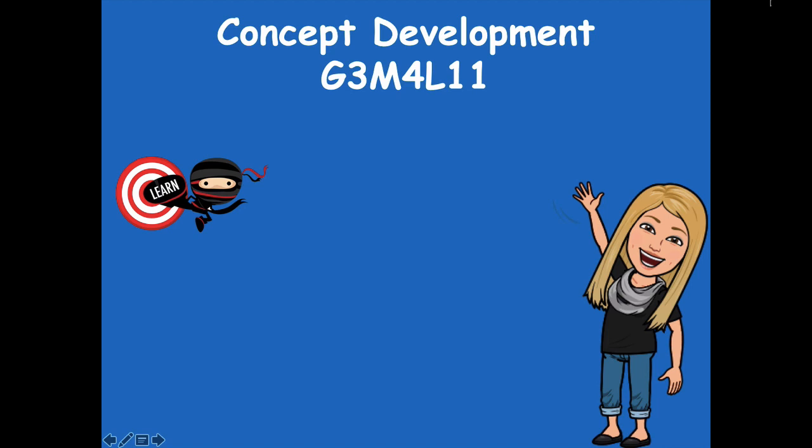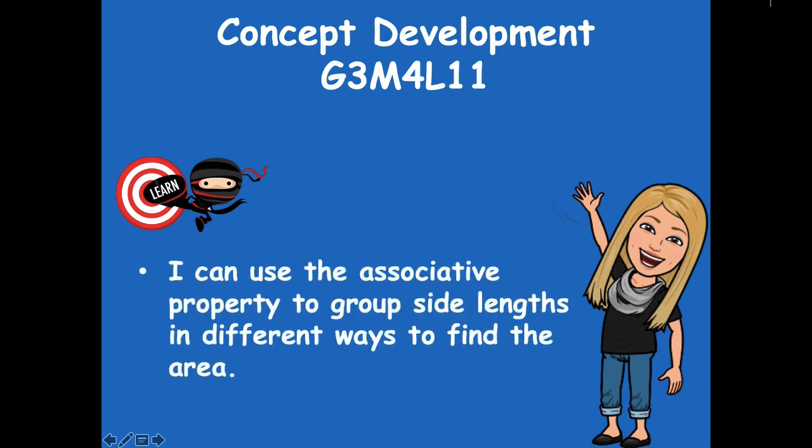Hey boys and girls, it's Mrs. Walker. For our lesson today we're going to talk about how we can use the associative property to help us group different factors, to help us group the different side lengths of a rectangle to model the area. Our learning goal says: I can use the associative property to group side lengths in different ways to find the area. We're also going to throw in a little bit of the commutative property as well. The associative property is where you can move the parentheses around in your multiplication problem, and the commutative property is the flip-flop where you can flip-flop those factors in a problem.